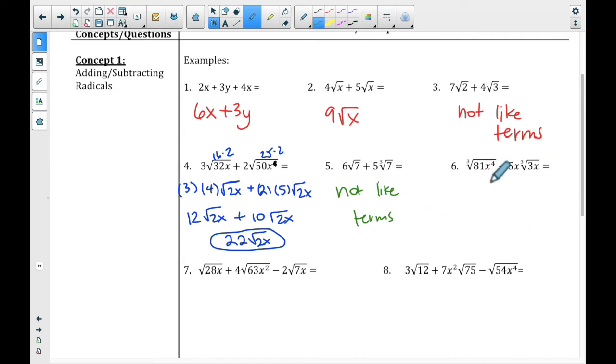On number 6, let's just take a second to simplify. Cube root means we're looking at 81. We're looking at the 27. 27 times 3 is 81. So the cube root of 27 is 3, and the cube root of x to the fourth, x on the outside with a cube root of 3x on the inside.